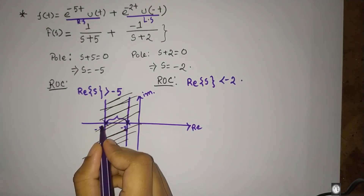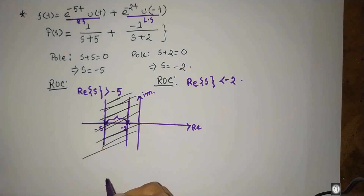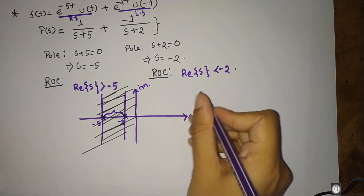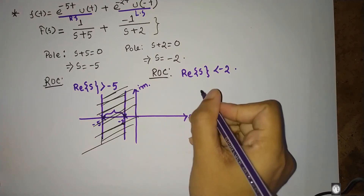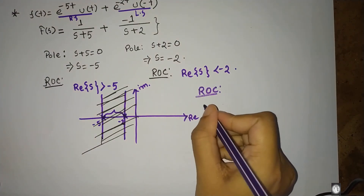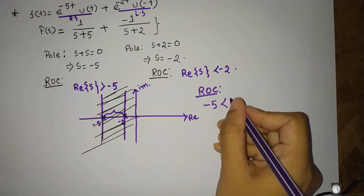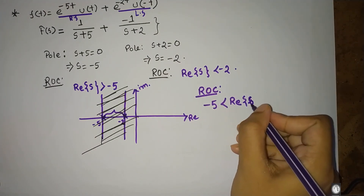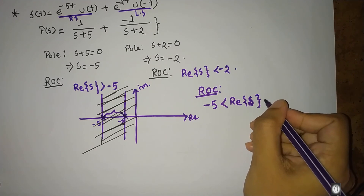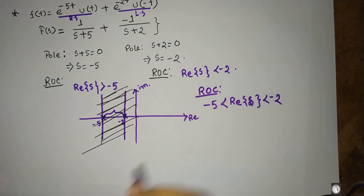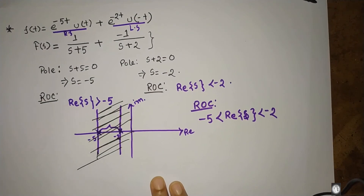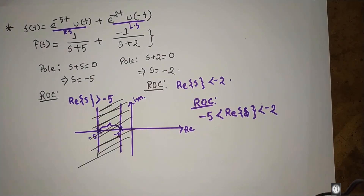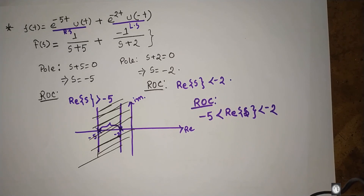The combined region of convergence is from minus 5 to minus 2. When combining both conditions, the ROC can be written as: minus 5 less than the real part of s less than minus 2. From any function like this, the individual ROCs can be found separately, and the combined region of convergence can be found as shown in this video.